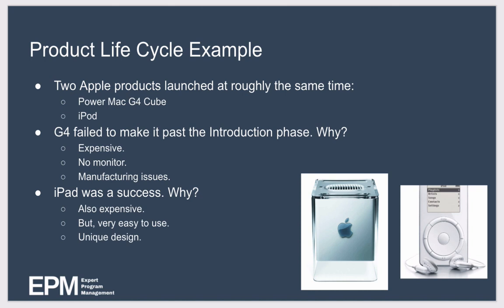Contrast that with the iPod, which made it all the way through the product lifecycle. The iPod was also expensive, but it had a unique design and was really easy to use compared to competitors such as Sony's Discman — those two factors combined to justify the high price point. Once customer awareness began to spread through word of mouth and advertising, the iPod entered the growth phase where sales were rocketing. But over time competition began to catch up and the maturity phase was entered. Apple reduced the price to maintain competitiveness and capture new customers who were previously priced out, but economies of scale meant profitability at this stage was maintained.